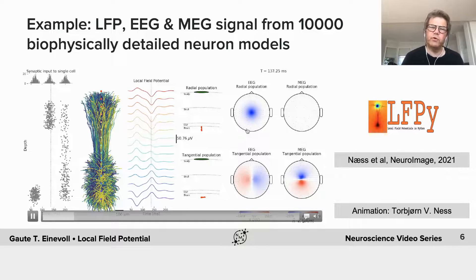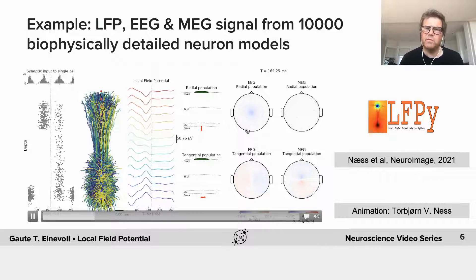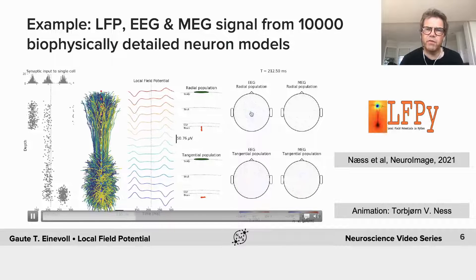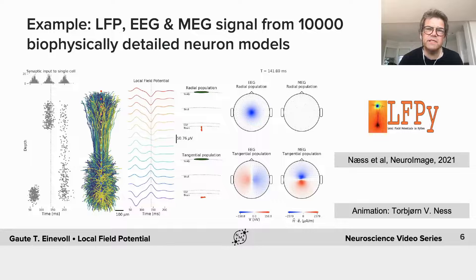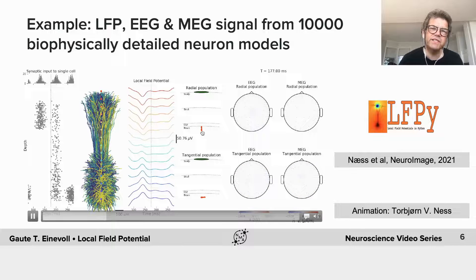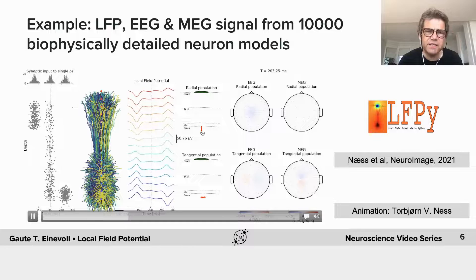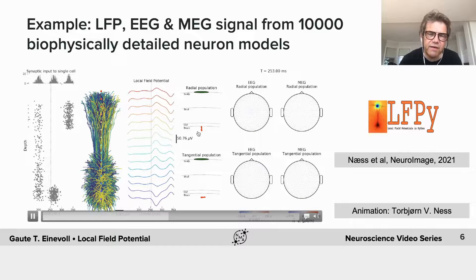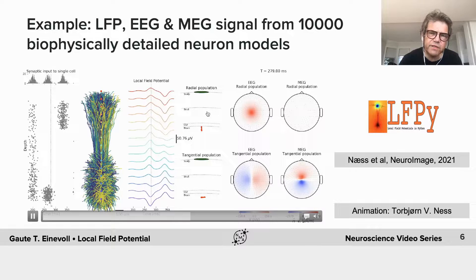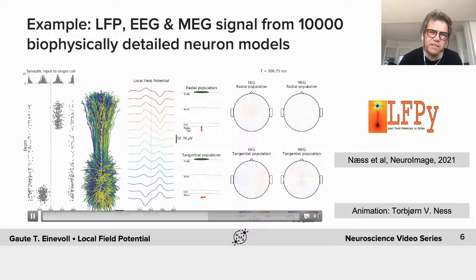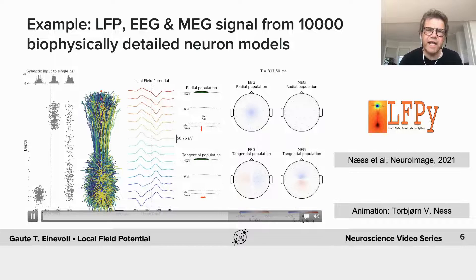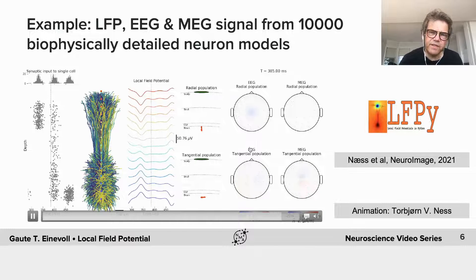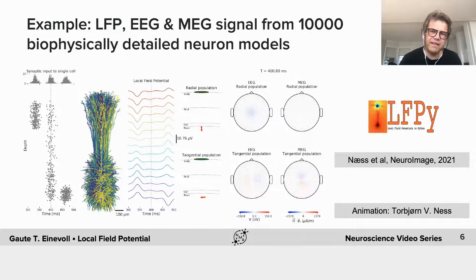This is on the right here, we see what you would measure at the same time with an EEG electrode. That's an electrode put on the top of the head. So this is for the case where the population is radial, meaning that, so here's illustrated is a population of neurons, this red thing here, and the signal goes through the cerebrospinal fluid and skull and scalp and everything. And this is what you measure on the top.